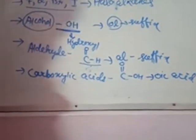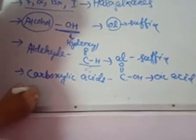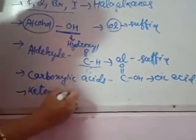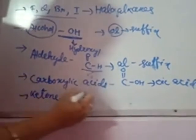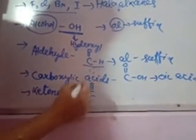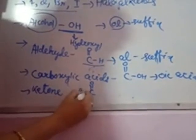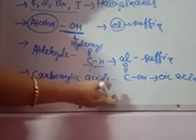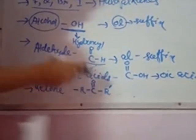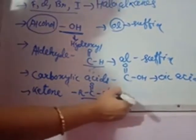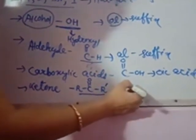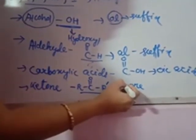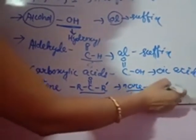The next group is the ketone group. The representation of the ketone group is: R — C double bond O — R prime. So here one alkyl group on one side, another alkyl group on the other side, and C double bond O in the middle. The suffix for ketone compounds is -ONE, so examples are propanone, butanone. The suffix is -ONE.